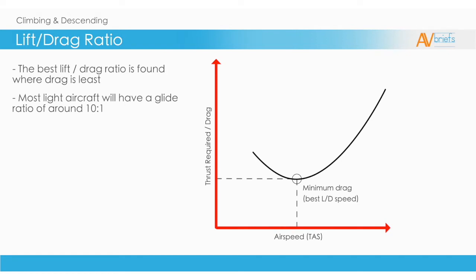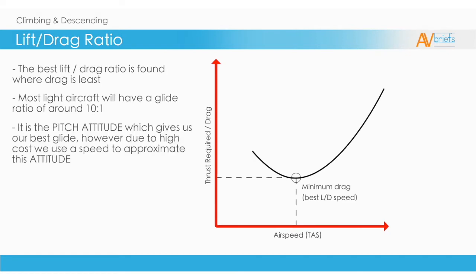Most light aircraft will have a glide ratio which will be about 10 to 1. It is the pitch attitude which gives us our best glide. However, due to high cost, we use a speed to approximate this attitude.